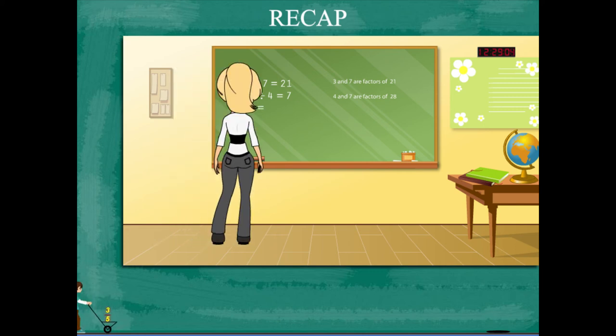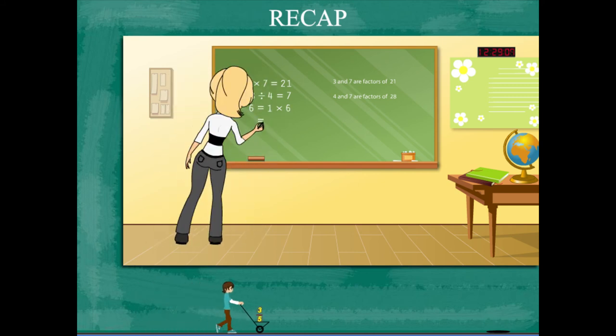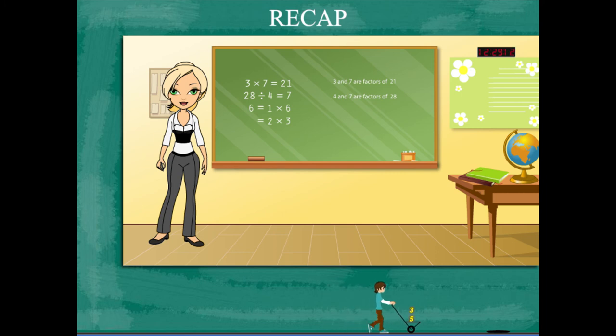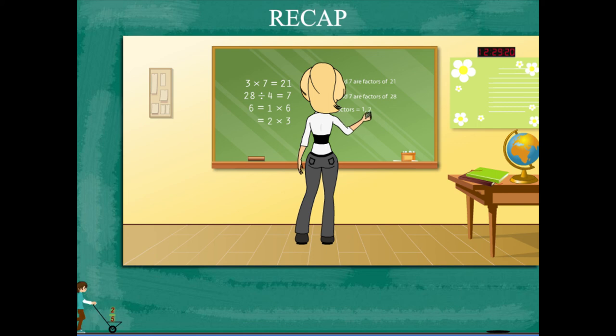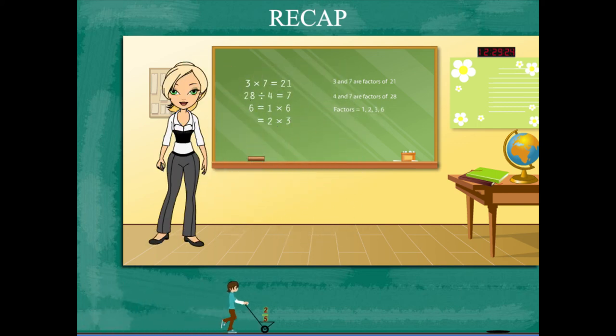Rosie now writes 6 = 1 × 6 = 2 × 3. She explains that the factors in this case are 1, 2, 3, and 6.